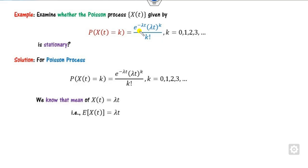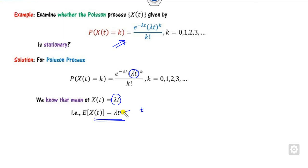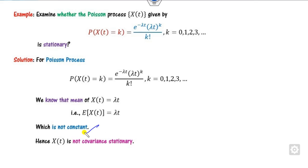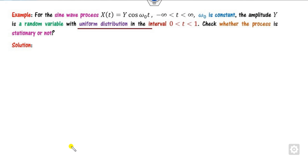Next, check whether a Poisson process is stationary. We all know that for a Poisson distribution the mean equals the parameter λt. Since this depends on t, for different values of t the mean has a different value — it is not constant. Therefore the Poisson process is NOT stationary.